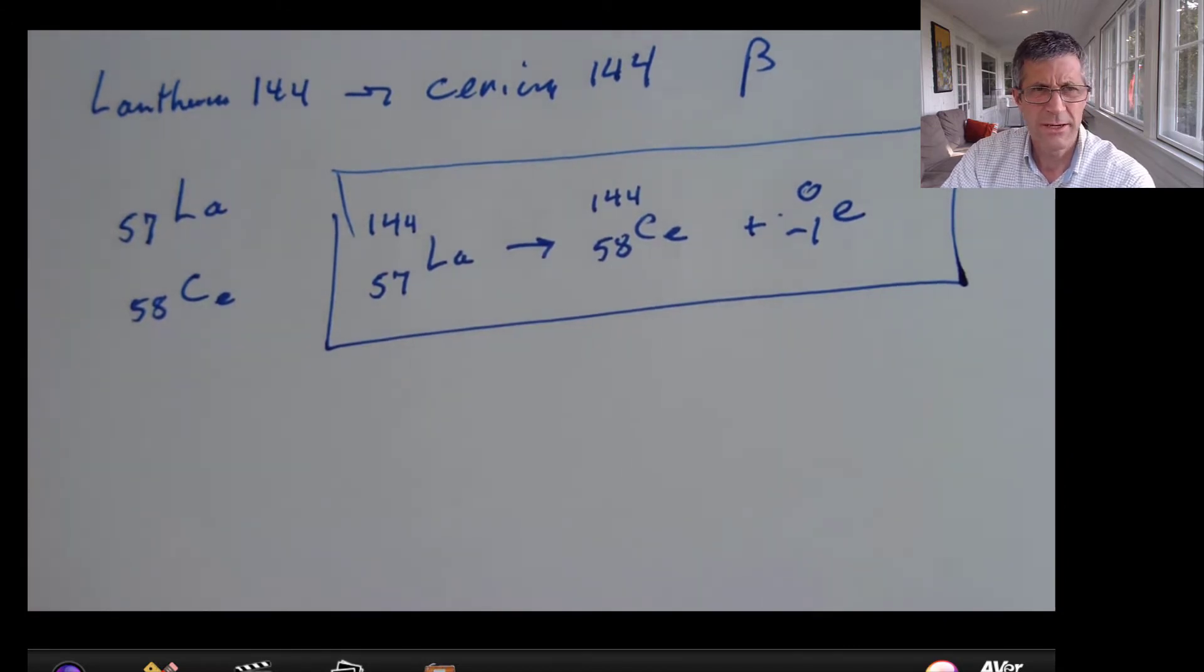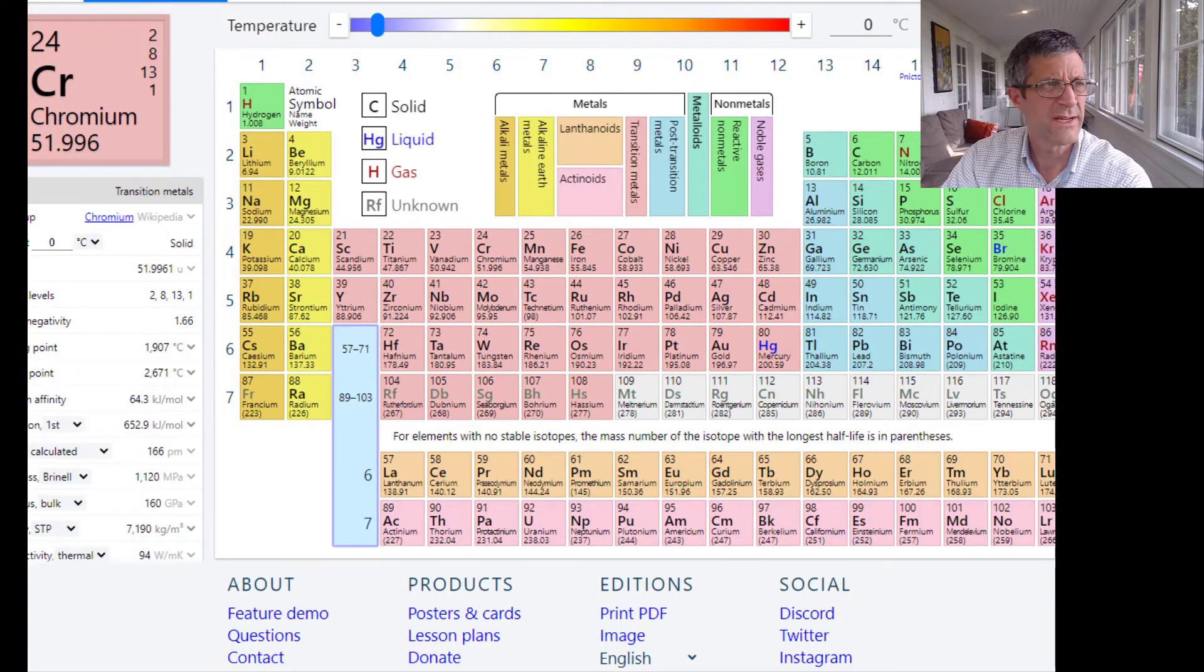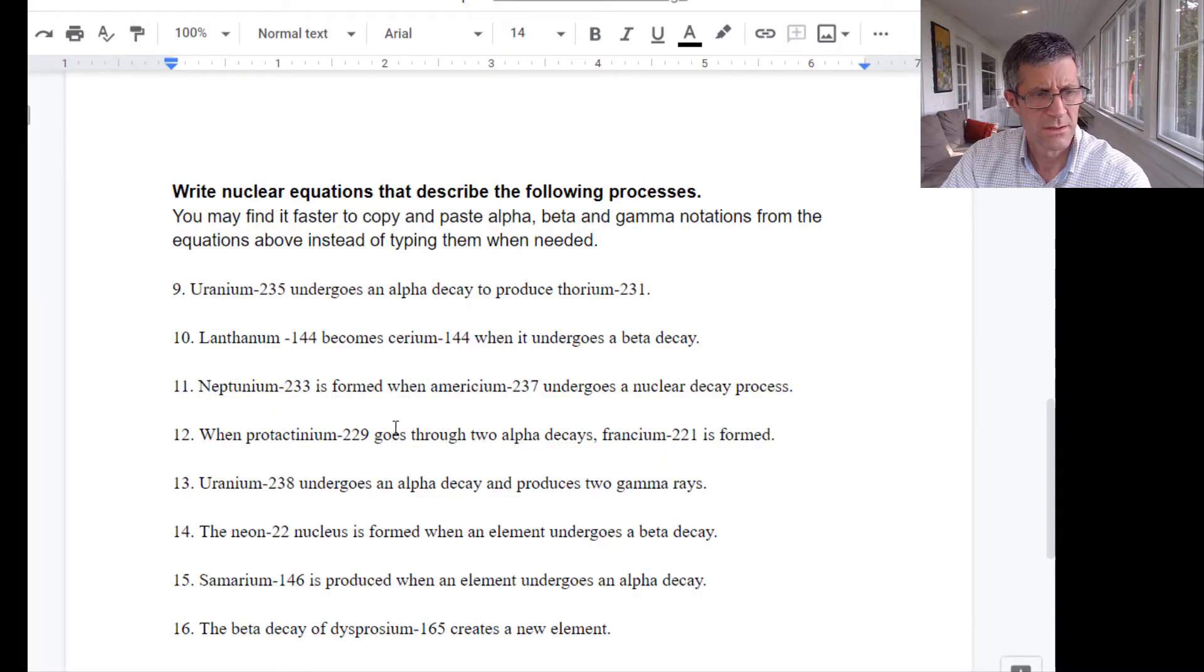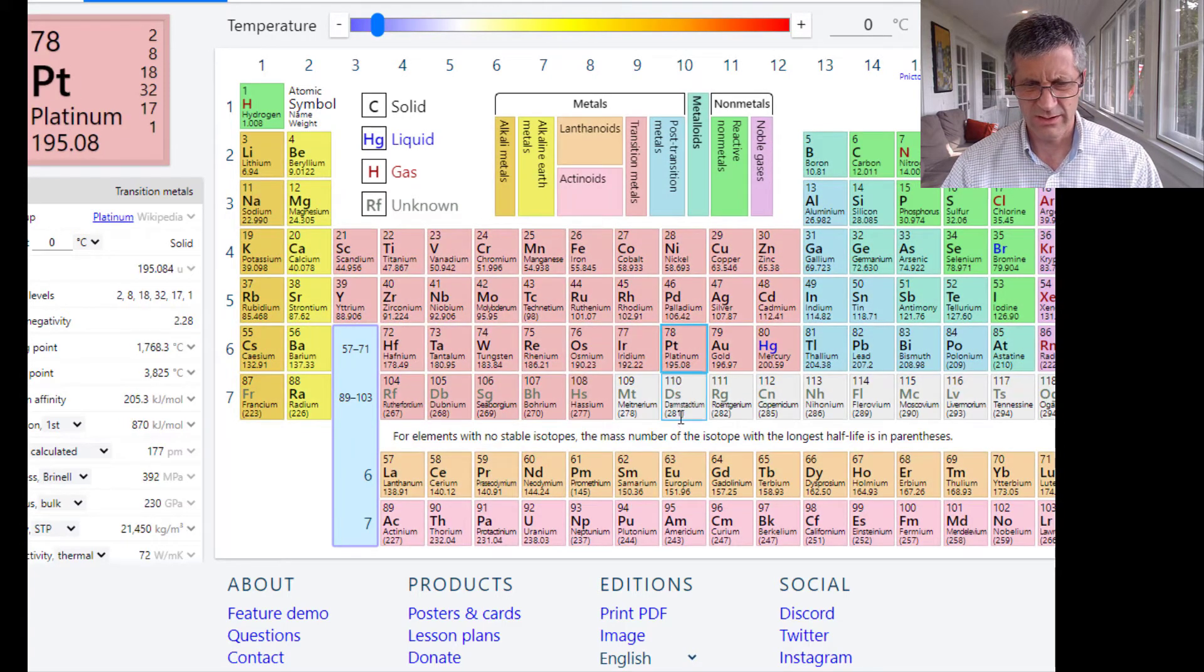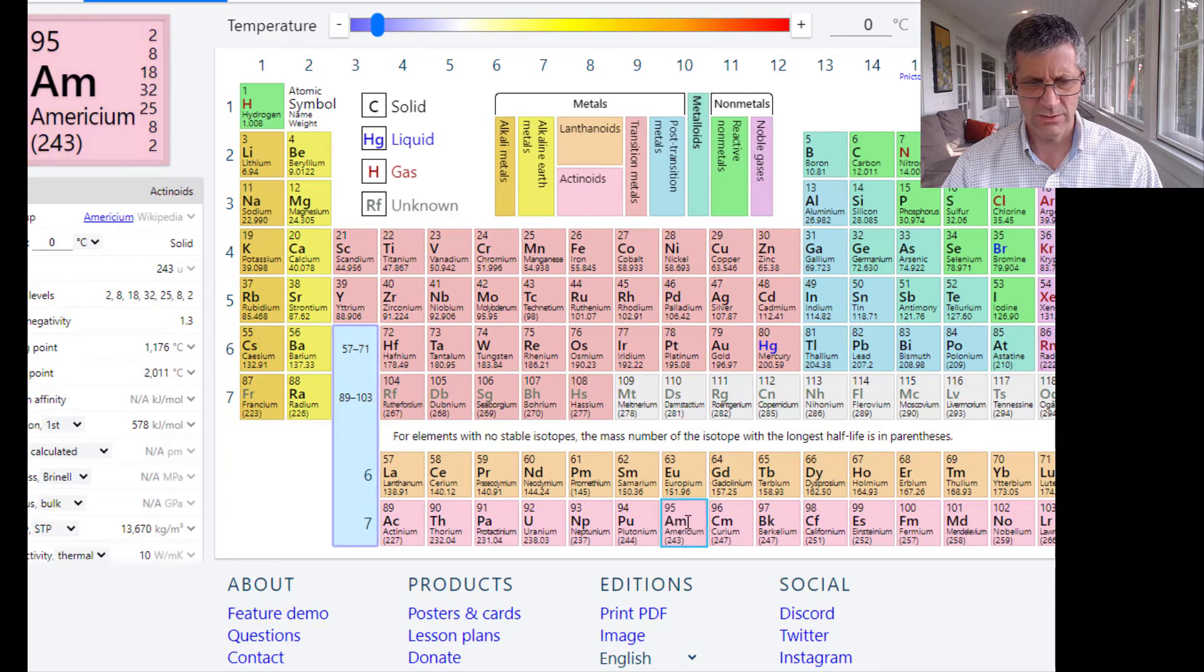Okay, let's do one more. Neptunium-233 is formed when americium-237 undergoes a nuclear decay process. Now tell me it's going to be alpha, beta, or gamma. Let's figure it out. So I'm going to go to the periodic table. I'm going to look up Neptunium. Where's Neptunium? Here's americium.